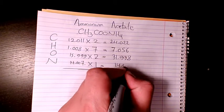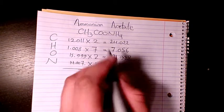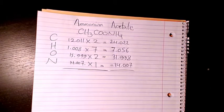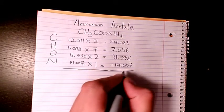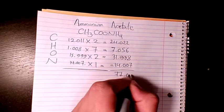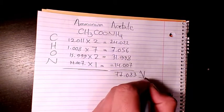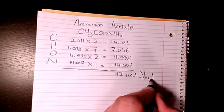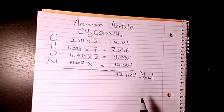Then you add them together: 24.022 plus 7.056 plus 31.998 plus 14.007 equals 77.083 grams per mole. So that's the molar mass or molecular weight of ammonium acetate.